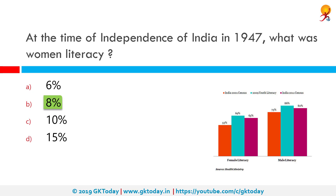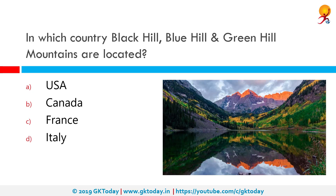In which country are Black Hills, Blue Hills, and Green Hills mountains located? They are located in the United States of America. Mountain ranges in the USA include the Appalachian Mountains, the Rocky Mountains, and the Sierra Nevada. The Appalachian Mountains run for 1,500 miles along the east coast of the United States from northern Alabama to Maine.